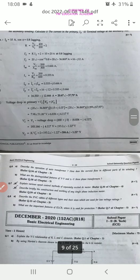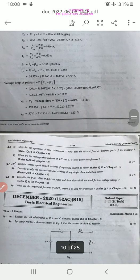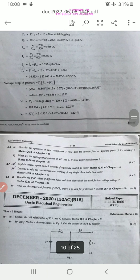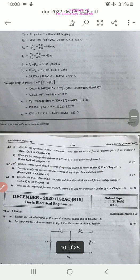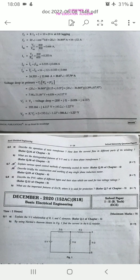Sixth question is, describe the operation of auto-transformer. How does the current flow in different parts of its winding? What are the different features of star, star and star delta three-phase transformers? Explain various speed control methods of separately excited DC motor.